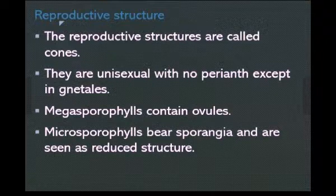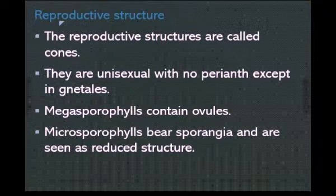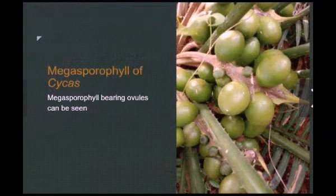The reproductive structures of gymnosperms are called cones. They are unisexual with no perianth, except in Gnetales. Megasporophylls contain ovules, and microsporophylls bear sporangia. Microsporophylls are seen as reduced structures, and the size of the male cone is much smaller than the female cone.